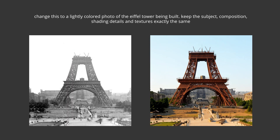This one is a test for colorization of black and white photos. The prompt was: change this to a lightly colored photo of the Eiffel Tower being built, keep the subject, composition, shading details, and textures exactly the same. I wanted to keep all the shading, line art, texture, and that old vintage photo style, but just add a little bit of color. By saying 'lightly colored,' I was adding just enough color to make it believable but still look old. It's done a pretty good job. I'm not sure if adding the subject name helps it understand what to color in, but it doesn't hurt to do that.